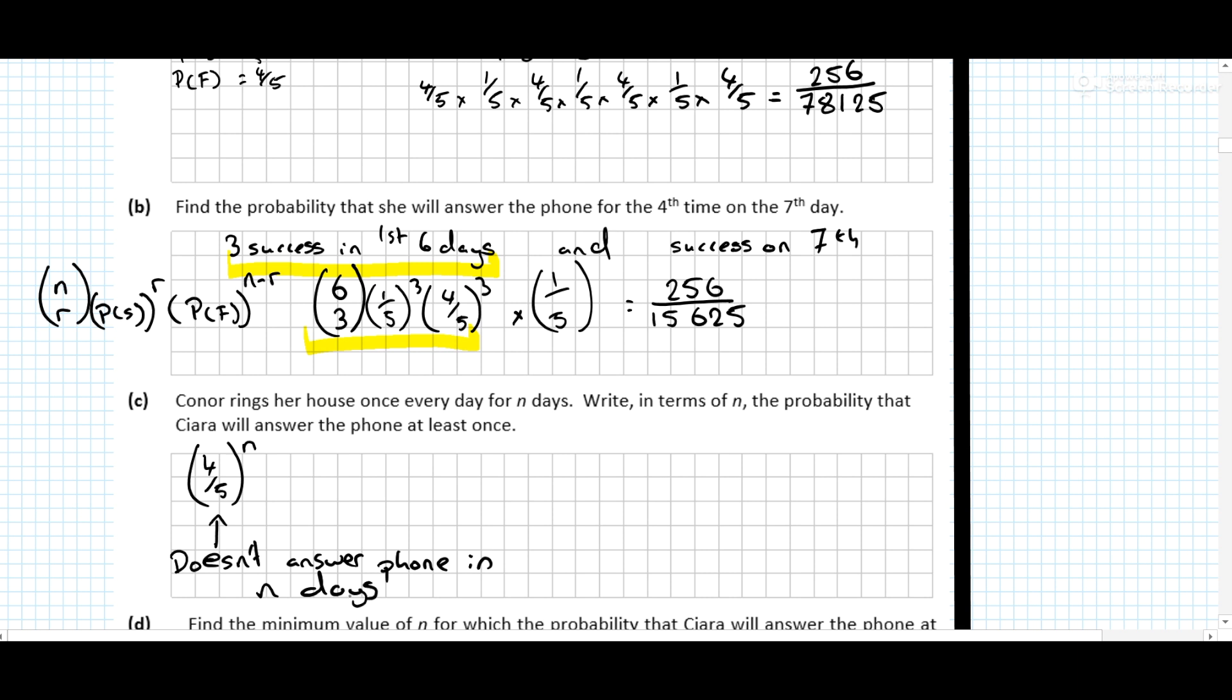Well, if we want the probability that she answers it at least once, we're going to go 1 minus 4 over 5 to the power of n, and that's the probability she will answer the phone at least once.